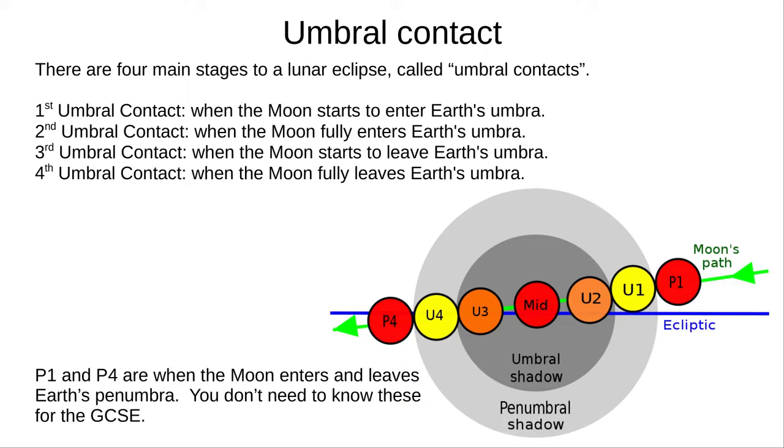Third umbral contact, U3, is when the Moon starts to leave Earth's umbra. And fourth umbral contact, U4, is when the Moon has fully left Earth's umbra.